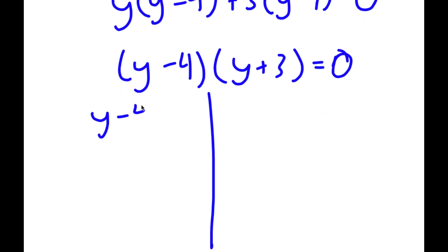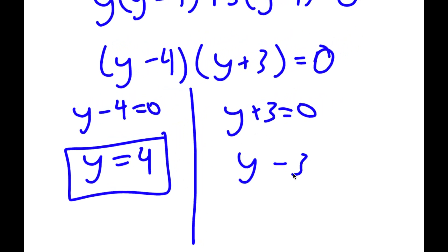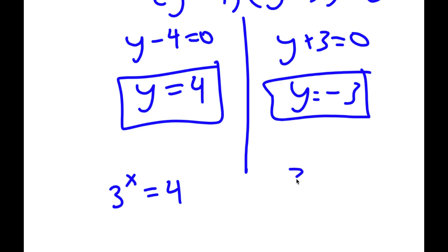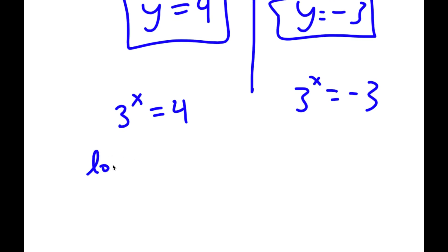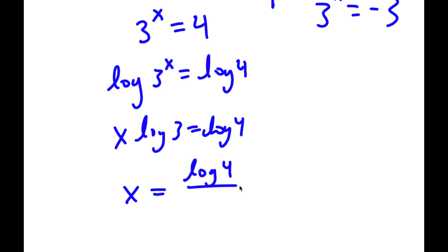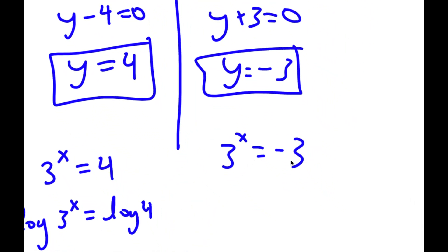This gives me two equations: y minus 4 is equal to 0, giving y equals 4, and y plus 3 is equal to 0, giving y equals negative 3. Remember we let 3 to the power of x equal y. So for y equals 4, I have 3 to the power of x equals 4. Taking the log on both sides, I get x times log 3 equals log 4, meaning x equals log 4 over log 3. For 3 to the power of x equals negative 3, you cannot raise a positive base to get a negative result, so there's no solution, and my only solution is log 4 over log 3.